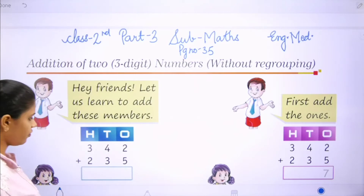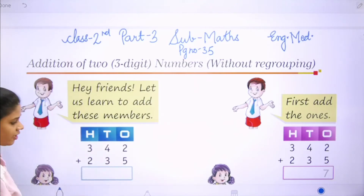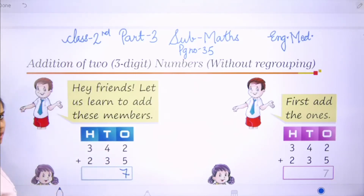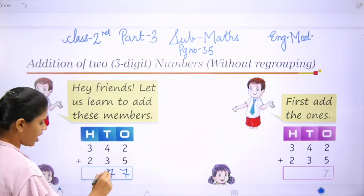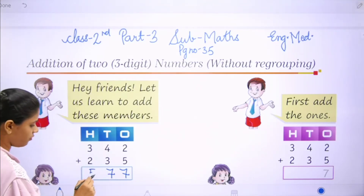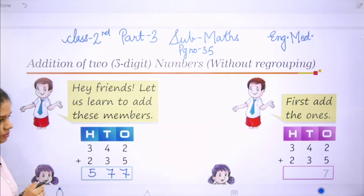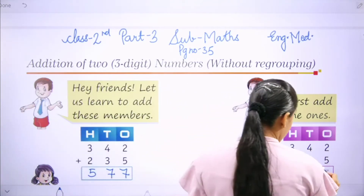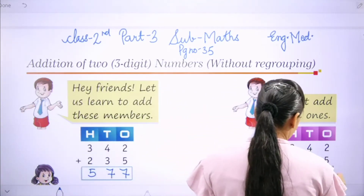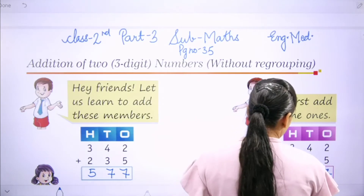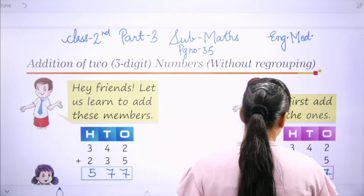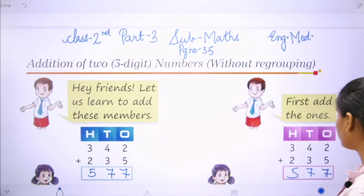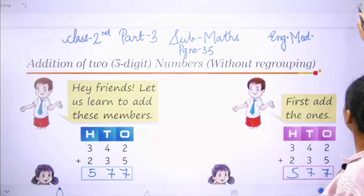Let's start with the first one. 2 plus 5 will be 7. 4 plus 3 will be 7. And 3 plus 2 will be 5. Next: 2 plus 5 is 7, 4 plus 3 is 7, and 3 plus 2 is 5. You can see both answers are the same.